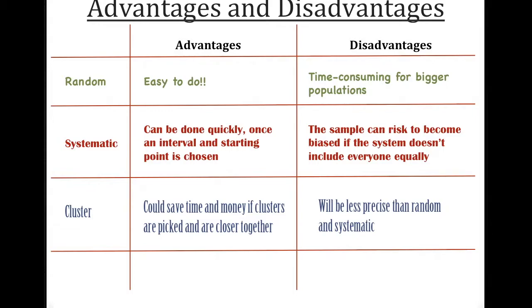Cluster sampling is good because it could save time and money if clusters are picked and they are closer together in terms of vicinity. However, it is not as precise because you aren't really asking everybody. And it's just less precise than random and systematic.